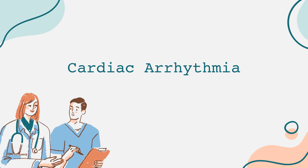Arrhythmias can be classified based on their origin and nature. Atrial arrhythmias arise in the atria, while ventricular arrhythmias originate in the ventricles. Common atrial arrhythmias include atrial fibrillation, atrial flutter, and atrial tachycardia. Atrial fibrillation is the most common and is characterized by chaotic electrical signals that lead to a rapid and irregular heartbeat. It can increase the risk of stroke, as irregular contractions can cause blood to pool in some areas, forming clots.